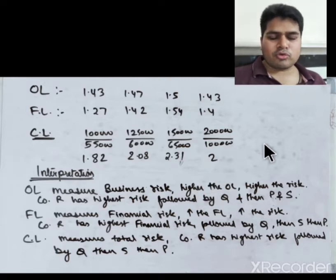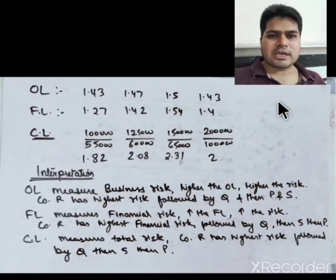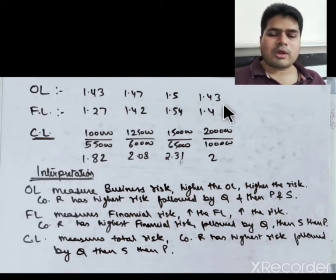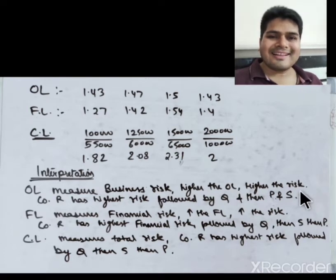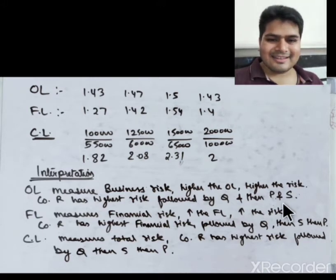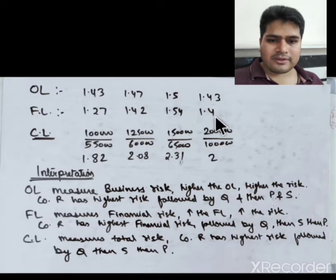For interpretation: OL measures business risk. Higher OL means higher risk. Company R has the highest business risk, followed by Q, and then P and S have the same risk. FL measures financial risk. Higher FL means higher financial risk. Company R again has the highest financial risk, followed by Q, then S, and then P.